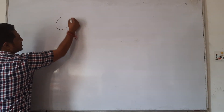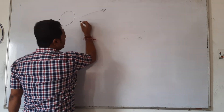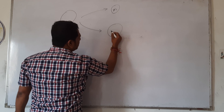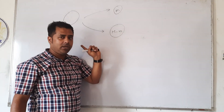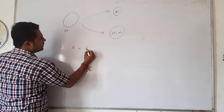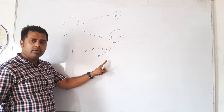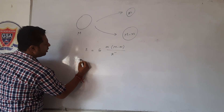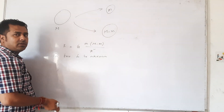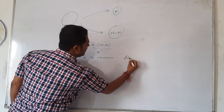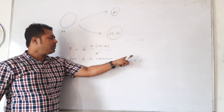Let us consider a body of mass M. It is divided into two parts: small m and M minus m. The force between them is F equals G times m times (M minus m) divided by x squared. For the force to be maximum, we differentiate F with respect to m and set dF/dm equal to zero.